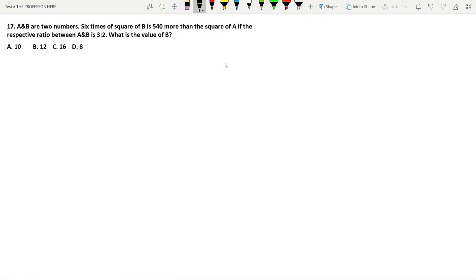Question number 17. a and b are two numbers. 6 times the square of b is 540 more than the square of a.